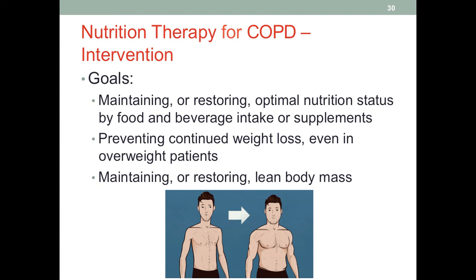The goals for intervention for COPD patients include to maintain, restore, and optimize nutrient status through food, beverage, and if necessary the use of supplements. We want to prevent continued weight loss — even in overweight patients, the weight loss caused by COPD is not desired. A loss of lean mass is associated with higher mortality; when lean mass loss reaches 40%, mortality is 100%. Therefore, we really want to maintain lean mass, and if we can restore some of it, that would be ideal.